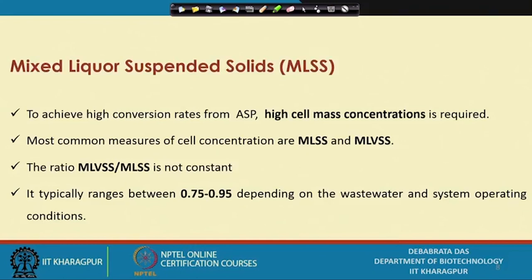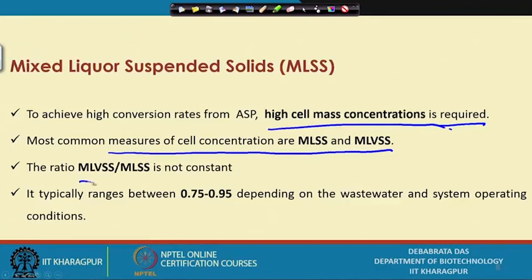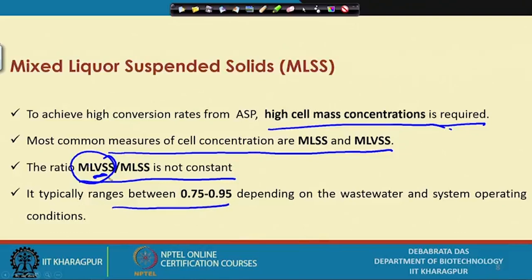The COD of a sample keeps decreasing with respect to treatment processes until it becomes constant. The difference between the input value and the final constant value is actually the BOD value, so from the COD curve we can extrapolate the BOD value. BOD can also be estimated by the azide method; dissolved oxygen concentration can be estimated either by using a dissolved oxygen probe or by the azide chemical method. To achieve high conversion, a high cell biomass concentration is required, and the MLVSS/MLSS ratio plays a very important role — typical range is 0.75 to 0.95 depending on the wastewater and system operating conditions.